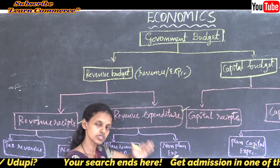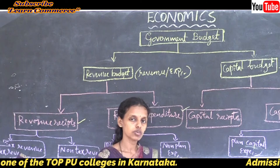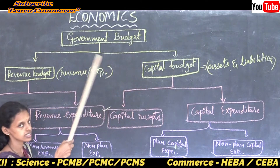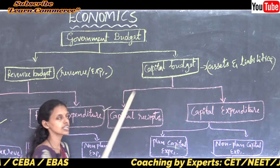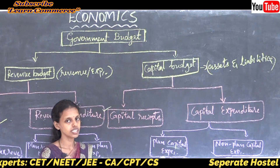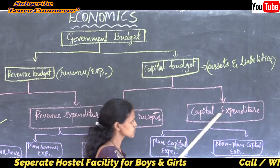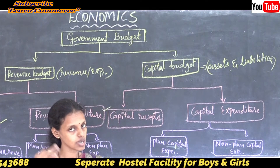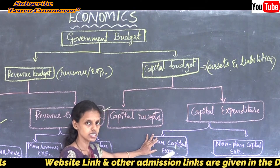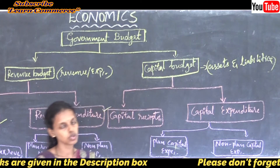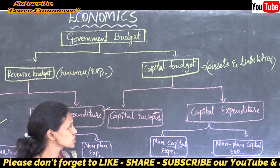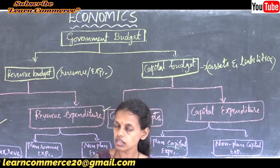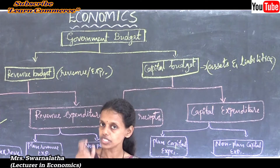Revenue budget includes revenue and expenditure of the government during the financial year. The budget is always prepared for the upcoming year — on the basis of the current year we prepare for the future. Capital budget includes capital receipts and capital expenditure. Planned capital expenditure means keeping money in the budget to arrange assets. Non-planned capital expenditure means investing during emergencies.